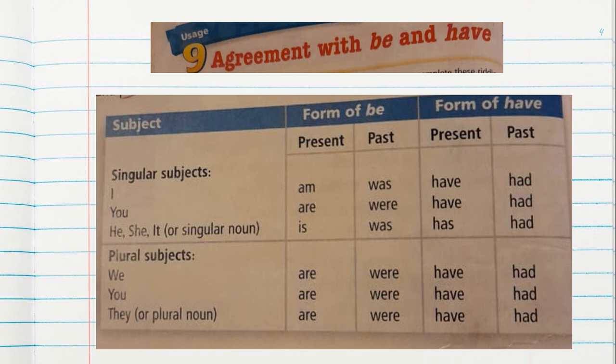Then we have the subject you, which means tú. You are in present, and in past it will be you were. And we have the subject he, she, or it, for singular nouns. That means he means Joel, she means María, it is the dog. If the subject is singular, you will use the form of the verb be: is. He is, Juan is, she is, María is. In past: Juan was, he was, she was, Rosita was, the dog was.